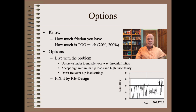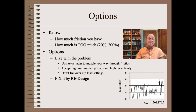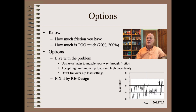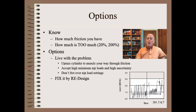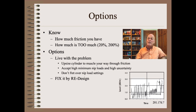Before you consider your options, you need to know two things. First, how much friction you have, by the measurement methods described in previous clips. Second, how much is too much? Is 20% too much? Or can you take 200% because the application is tolerant? Laminating nips and craft paper winding nips are usually tolerant, while tissue nips never are. If we decide we have too much friction, we have two options: the first is to live with the problem, and the second is to redesign the nip loading system in very specific ways.